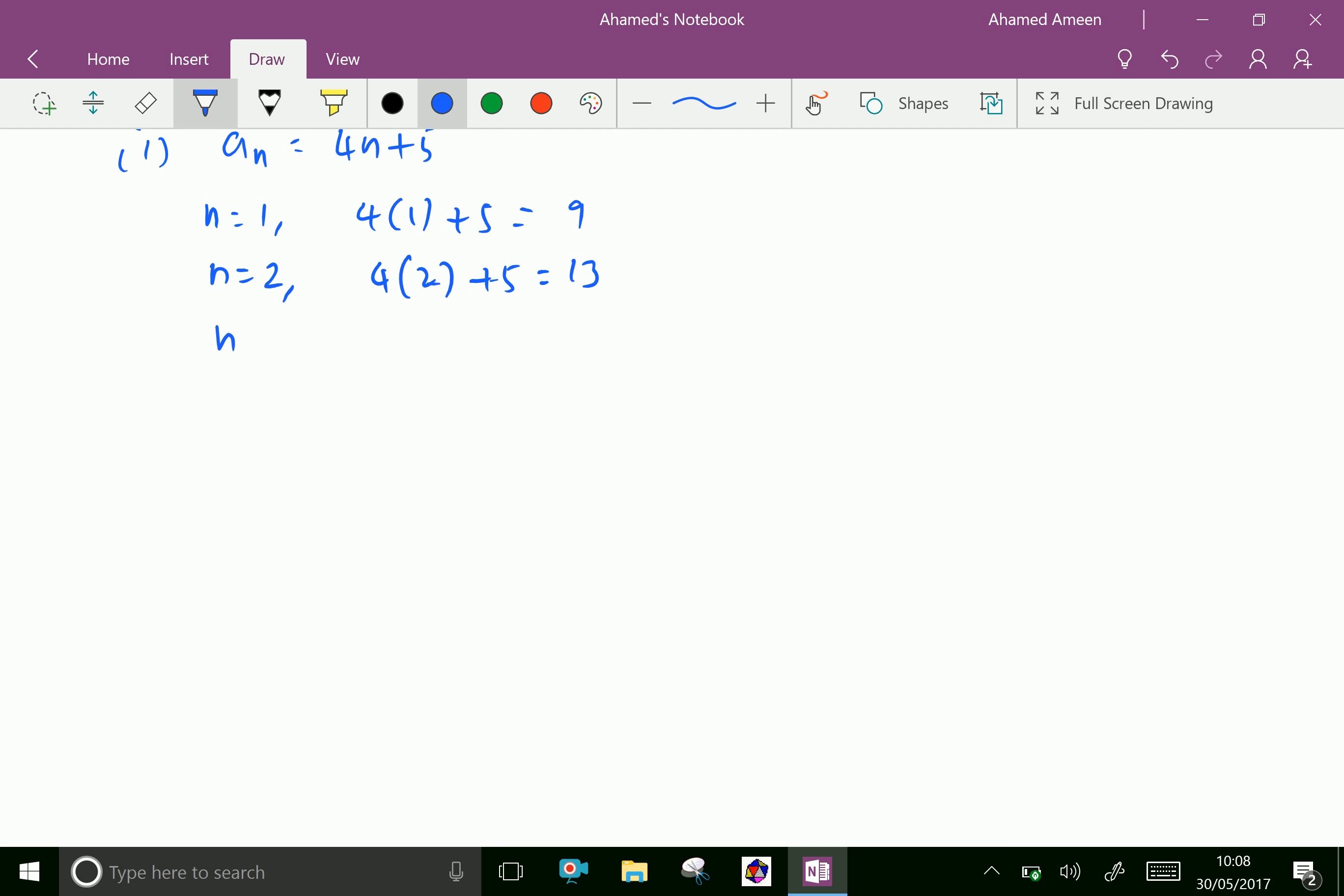n equal 3. Then 4 into 3 plus 5. 4 times 3 is 12. 12 plus 5 is 17.